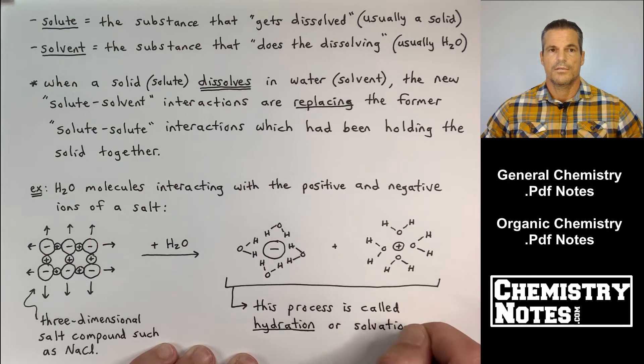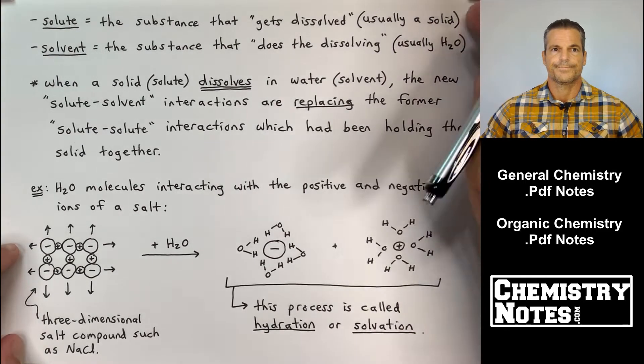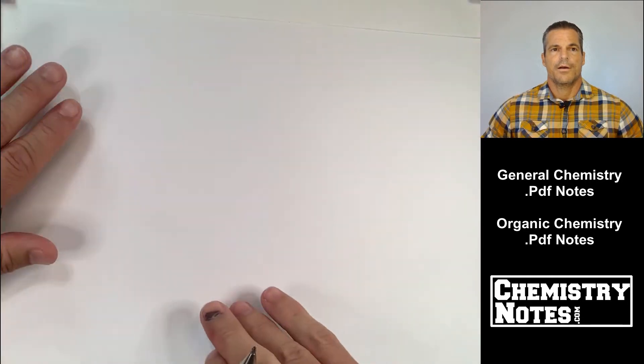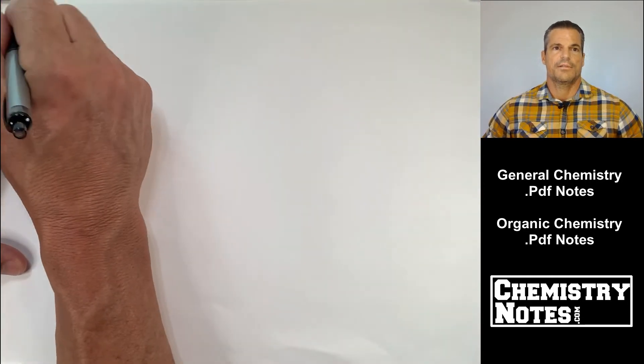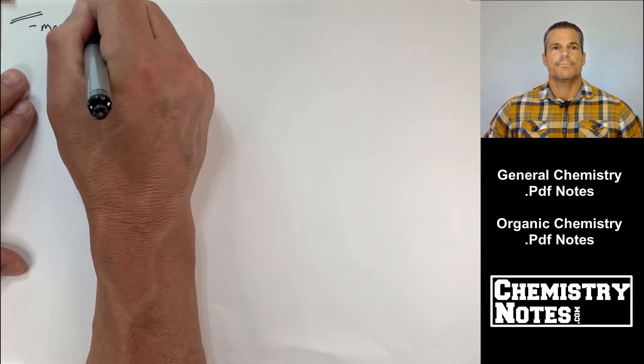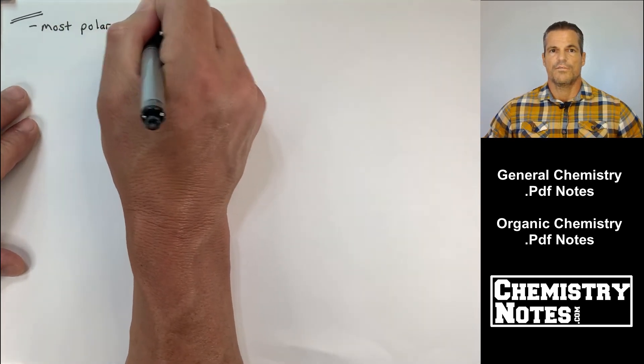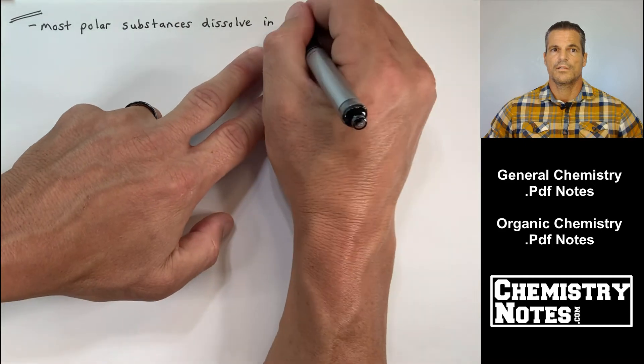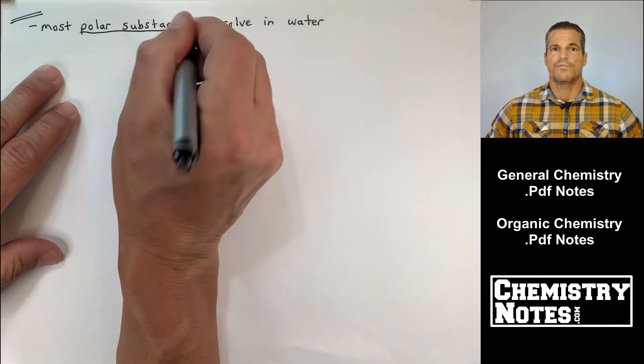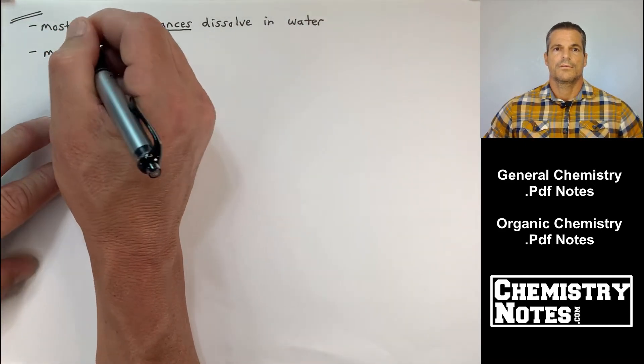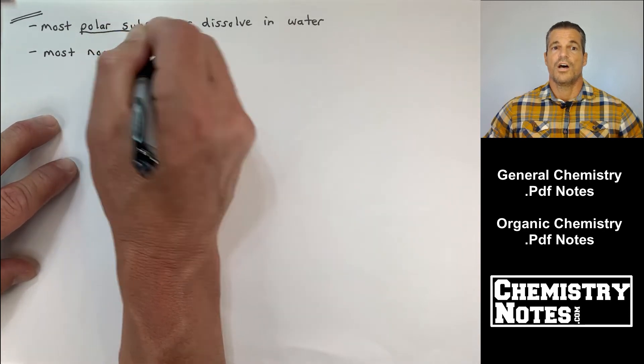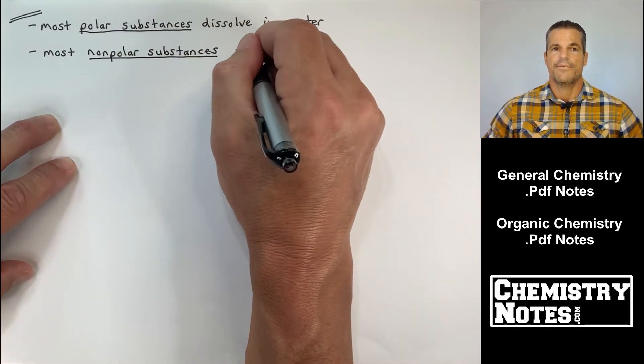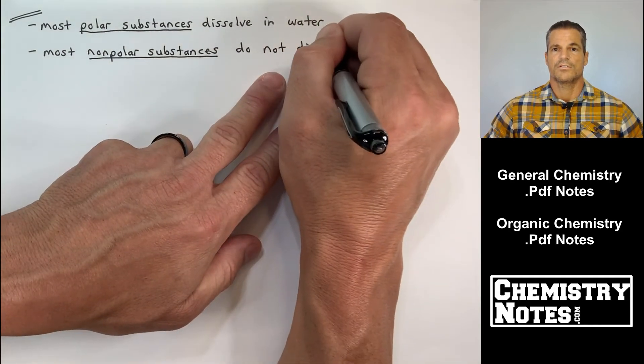All right, page three of our notes it says most polar substances dissolve in water and you notice that water is also a polar substance, so polar substances dissolve in water. Whereas most non-polar substances do not dissolve in water. A lot of ionic compounds are going to dissolve in water for that reason.